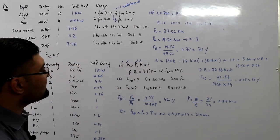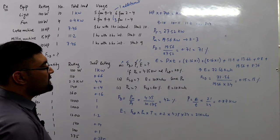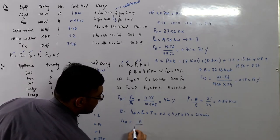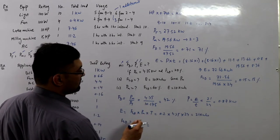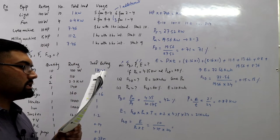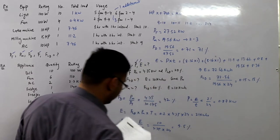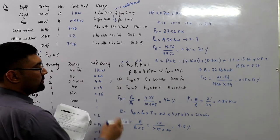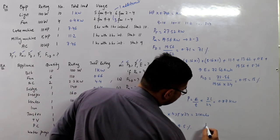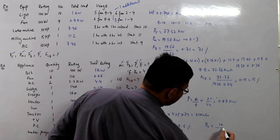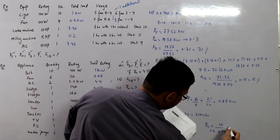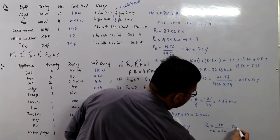Part b: fld is unknown, e is 10 kilowatt hours, pm is 4.35 kW. Using fld = e / (pm × t): 10 / (4.35 × 24) gives 9.5 percent. For part c: pm is unknown, fld is given, e is 10 kilowatt hours, t is 24 hours. pm = e / (fld × t), which comes out to approximately 0.7 kilowatts.